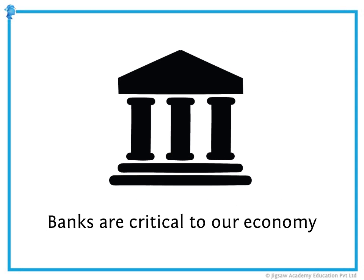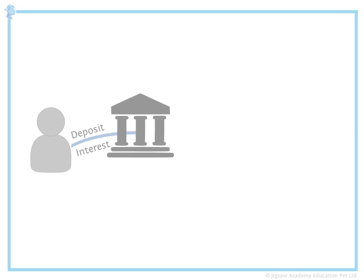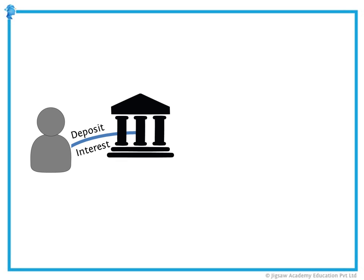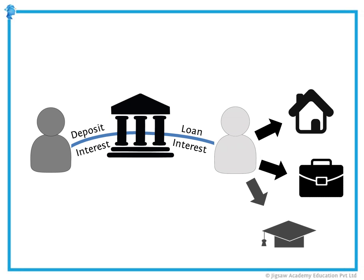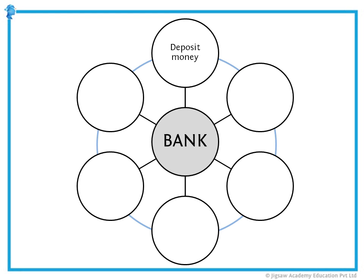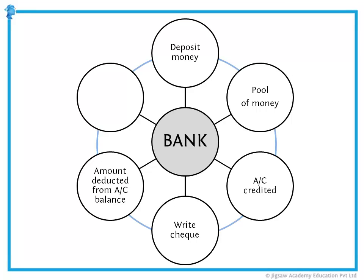Banks are critical to our economy. The primary function of a bank is to put the account holder's money to use by lending it out to others who can use it to buy homes, businesses, send kids to college, etc. When you deposit your money in the bank, it goes into a big pool of money along with everyone else's, and your account is credited with the amount of your deposit. When you write checks, the amount is deducted from your account balance, and any interest you earn on your balance is added to your account.